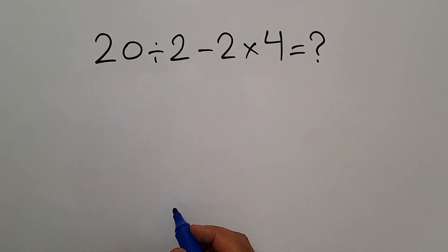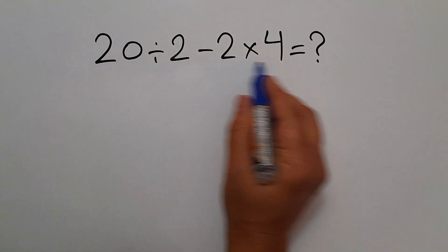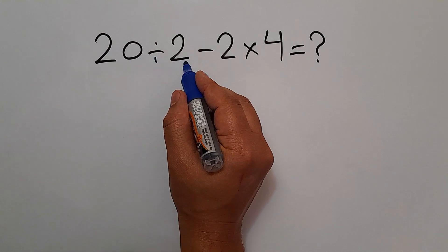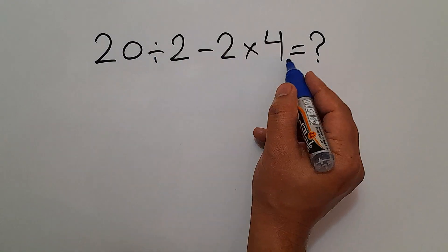Hey guys and welcome to this video. In this video, we want to calculate this expression: 20 divided by 2 minus 2, then times 4.